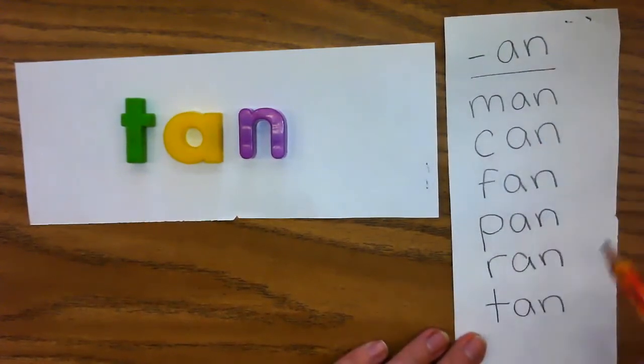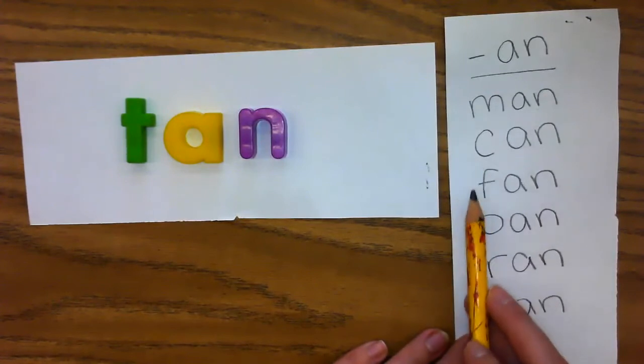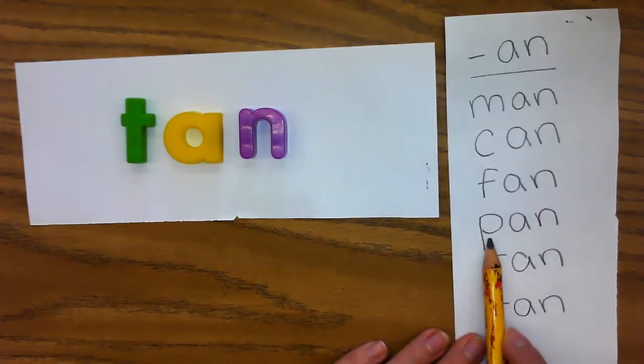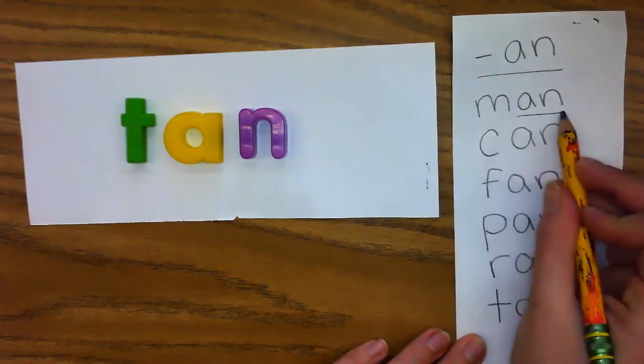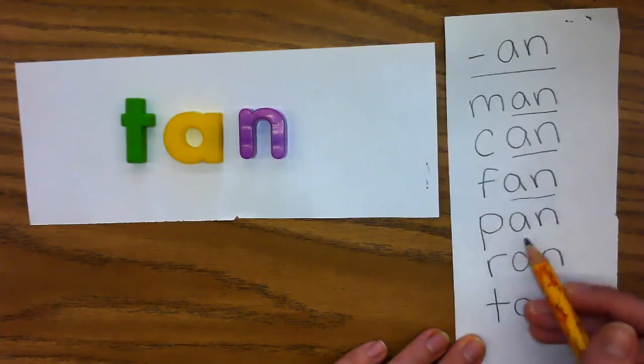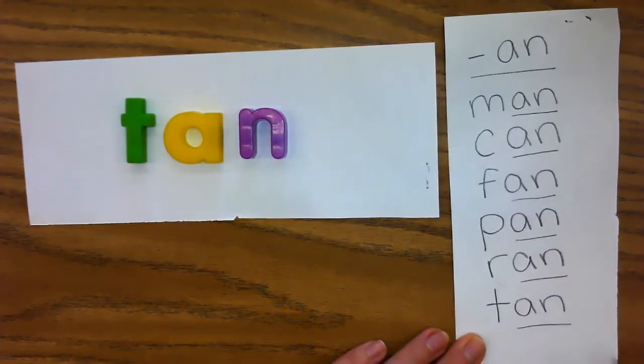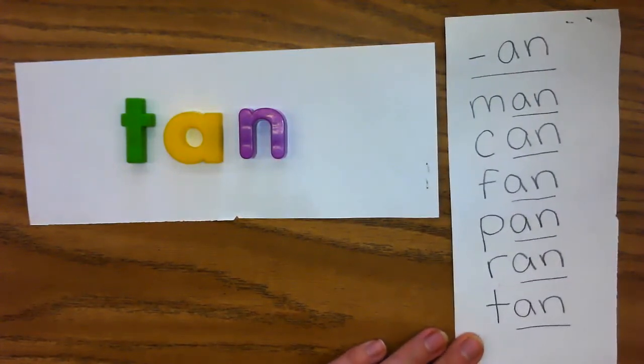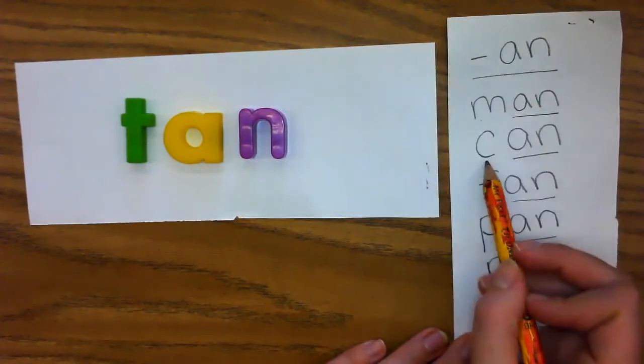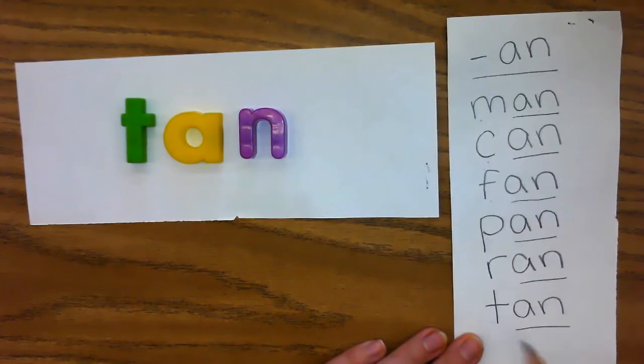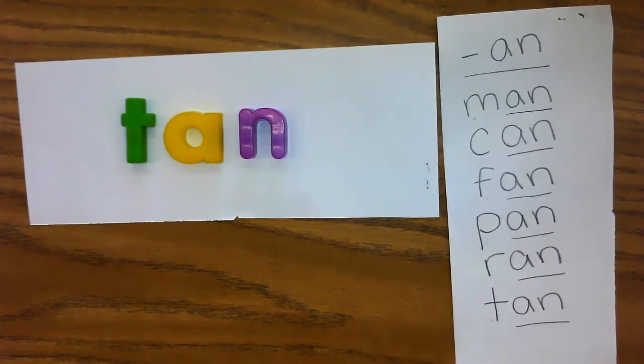Look at all these an words we made. Man, can, fan, pan, ran, tan. They all rhyme. The ending part stays the same. An, see how it's the same letters? And those letters make the same sounds. But the beginning sound, the beginning letter changes, which changes the word. Can you think of some more an words? Thanks for learning with me.